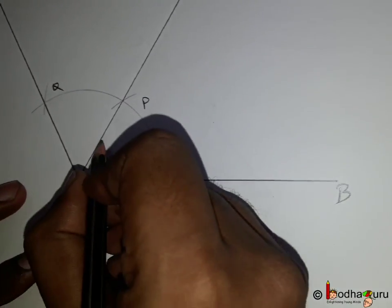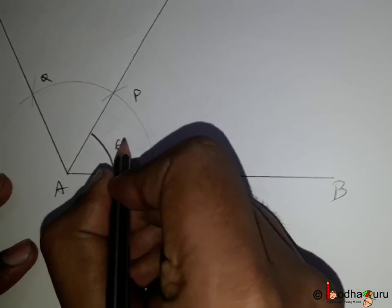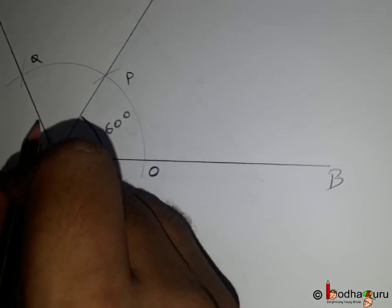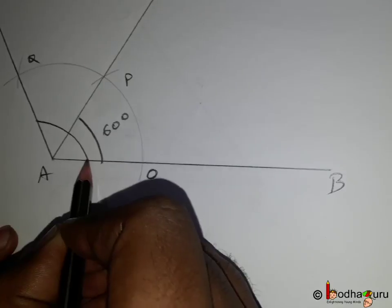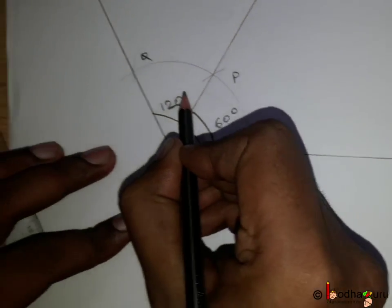So, now you know how to make an angle of 60 degree and also of 120 degree using a compass. That's all for now. Bye-bye.